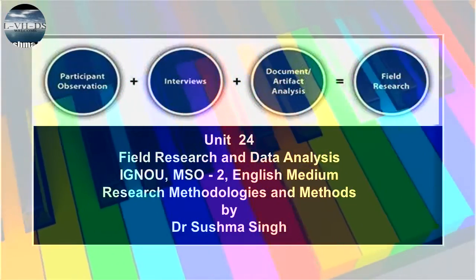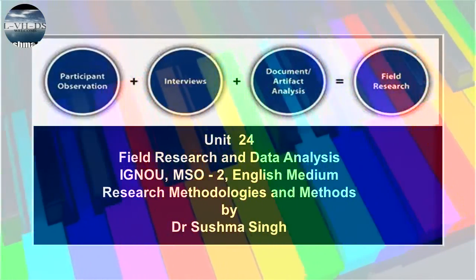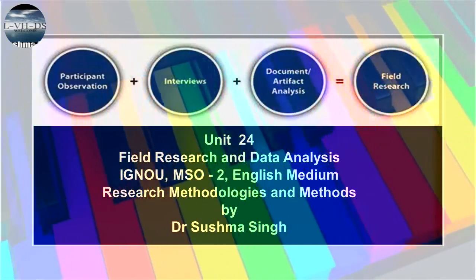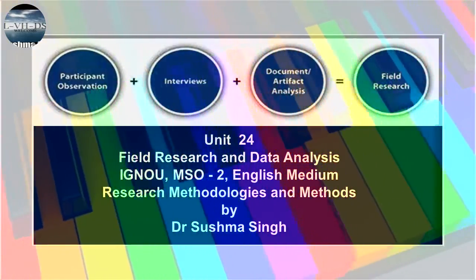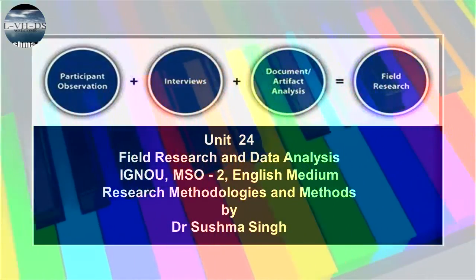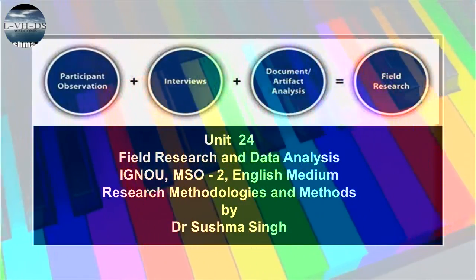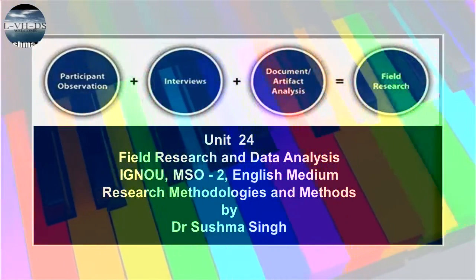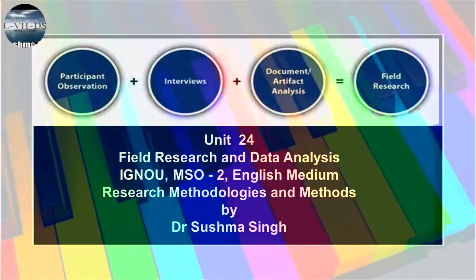In such contexts, researchers, instead of getting totally absorbed in the field situation, choose to selectively participate. Such actions have been described as quasi-participation in social science fieldwork. Participant observation involves not only observation, but the researcher uses triangulation — that is, using a number of techniques like observation, genealogies, interviews, questionnaires, life histories, case studies, oral histories, and today even participatory rural appraisal and rapid rural appraisal — to collect both primary and secondary sources from the field.